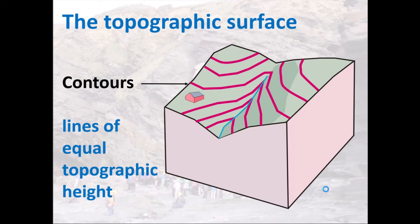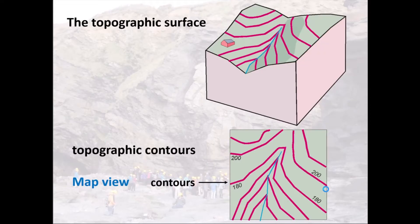Hopefully you remember that we've been talking about contours in terms of topography. Contours are just lines on a map that join points of equal height — that's what a topographic contour is. On our block diagram, all of those lines on the top surface are joining points of equal height above sea level. In map view, the red lines would be our contours joining points of equal height above sea level.